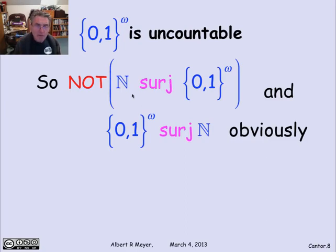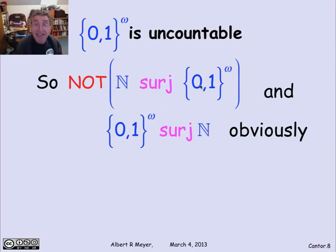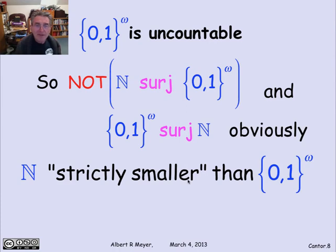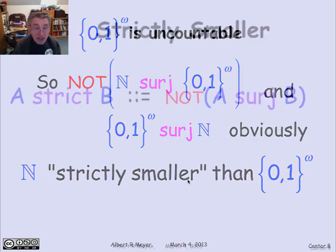If we remember our intuition, a surjection is read as 'greater than or equal to.' This tells us that the infinite binary sequences are at least as large a set as the non-negative integers. The converse is not true — the non-negative integers are not at least as large as the infinite binary sequences. So the non-negative integers are strictly smaller than the set of infinite binary sequences. Strictly smaller is in quotes, because we're really just talking about properties of surjections, bijections, and injections.